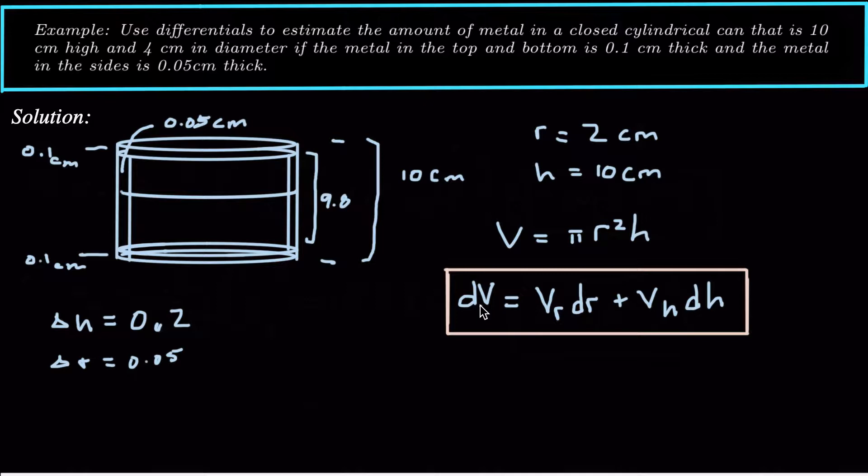And the differential volume, dV, is V_r times dr, so partial derivative of V with respect to r times dr, and then partial derivative of V with respect to h times dh. Well, for the independent variables, delta h and dh are going to be the same, and delta r and dr are going to be the same.